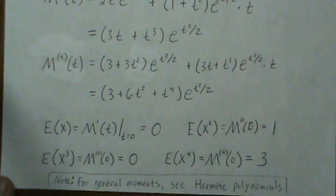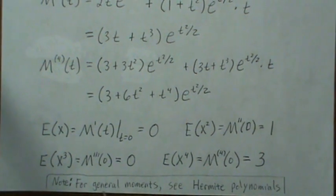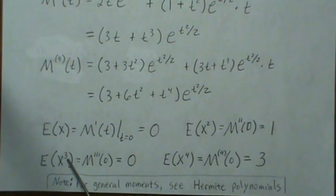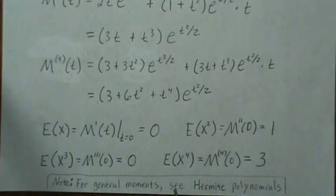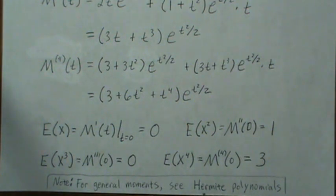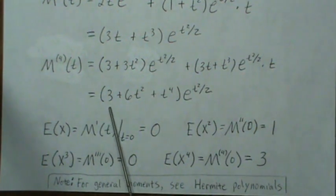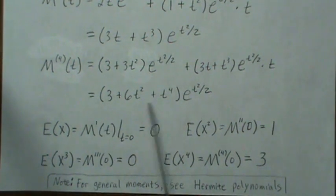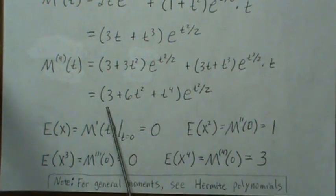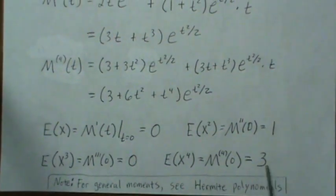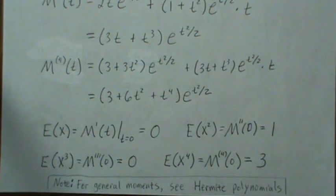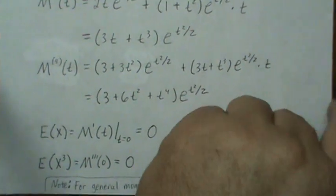I'm going to put a note here, and it's quite fascinating for the general moment — so not odd, so two, four, six, eight. I'm going to reference you to Hermite polynomials, which are one class of orthogonal polynomials. Once you find the Hermite polynomials, you look at the leading coefficient — or actually the trailing coefficient if you write it in reverse order — and then that becomes the nth moment when it's positive.